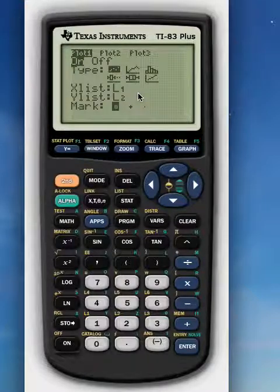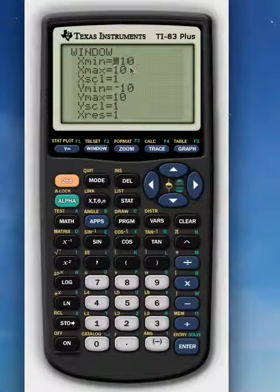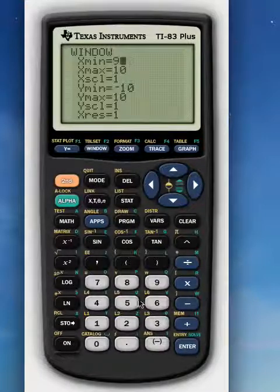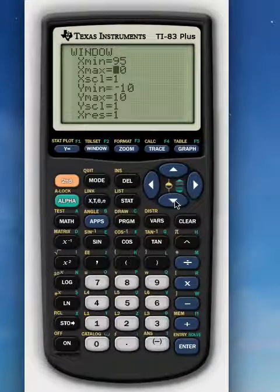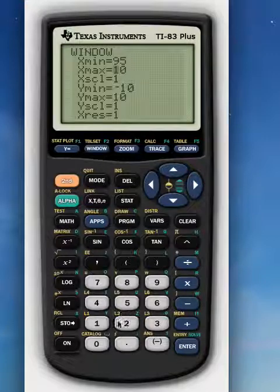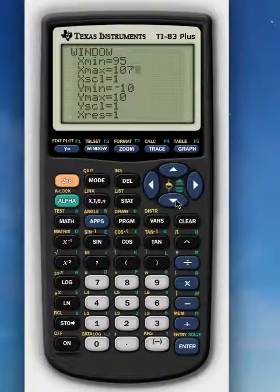Now the next thing I need to do is to set my window, because the default window is negative 10 to 10 and that's not going to pick up any of my data. In my data list, my lowest value is 99. So I want to go a little below that. So I'm going to say 95. And my highest X value is 105. So I'm going to say 107. I just want to be a little beyond my highest value.